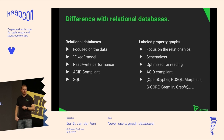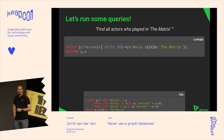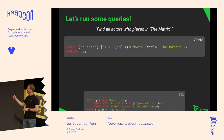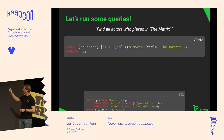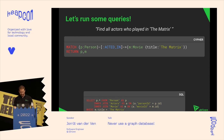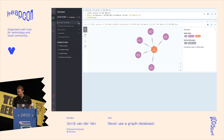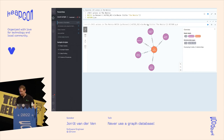Let's run some queries. Say we created this movie database and I want to find all the actors who played in The Matrix. In SQL I'd need several inner joins and a WHERE statement. In Cypher it looks a bit like ASCII art — I have a MATCH statement where I say I want to find a node with label Person that ACTED_IN a node with label Movie with the property "The Matrix." If I run that — I hope the demo gods are with me — we can see there are five people who acted in The Matrix in my database.